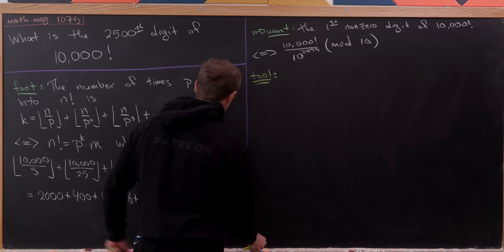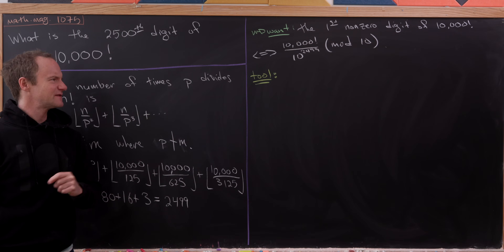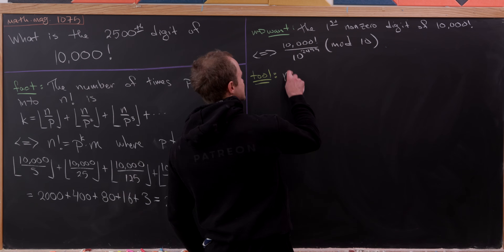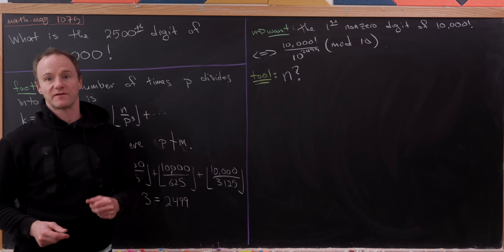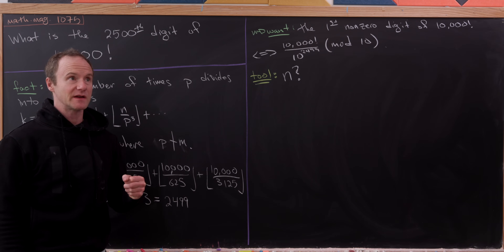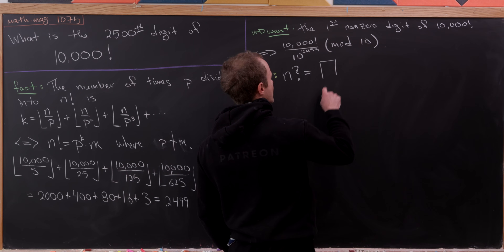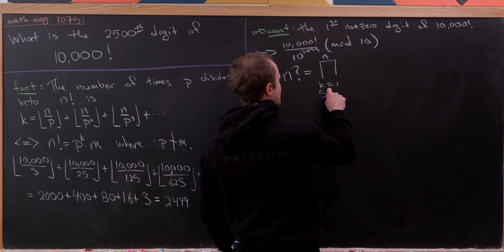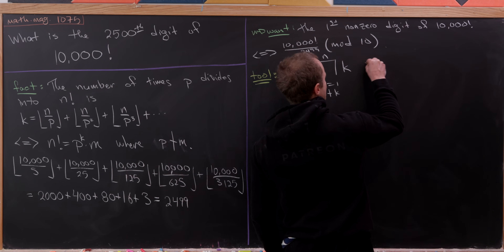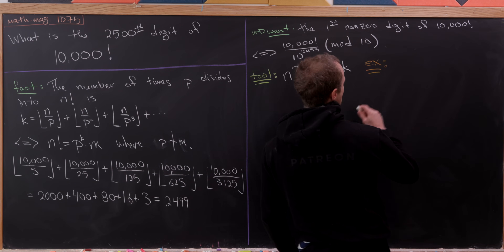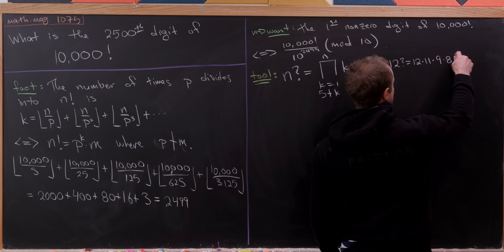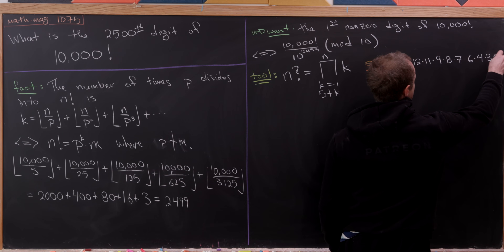This notational tool is described in the solution to this problem in a math magazine issue, but I've seen lots of problems like this before and they all use this general strategy. The tool is the 'n question mark' notation. Instead of an exclamation mark for a factorial, we've got a question mark. This is the product from 1 to n, but skipping the multiples of five — so the product of k as k goes from 1 to n, as long as 5 does not divide k.